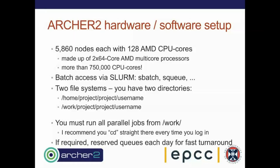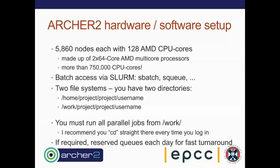The batch system is a way of sharing resources and managing them across lots of users. ARCHER2 has something like three or four thousand users, and we can easily have hundreds of active users at any one time all wanting to run jobs. There are also two main file systems for storing and retrieving data. There's a 'home' directory and a 'work' directory, structured as: home/project/project/username and work/project/project/username.